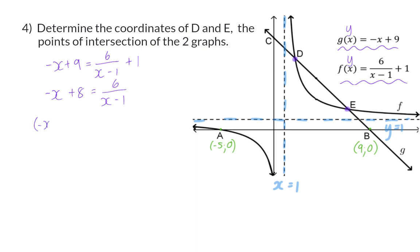and multiply it by the denominator of x minus 1. Next up, I can multiply out the brackets on the left-hand side and then get everything to the same side equal to 0.